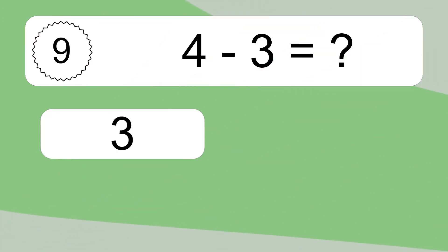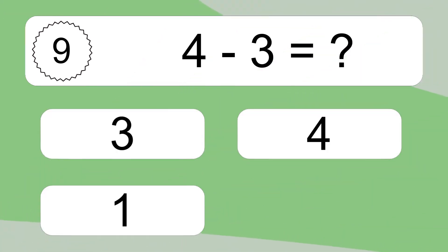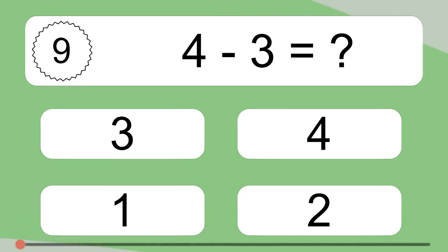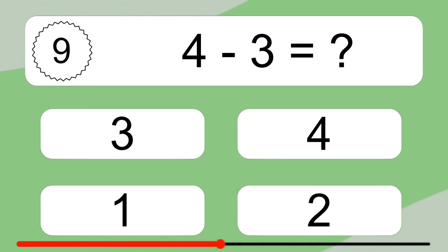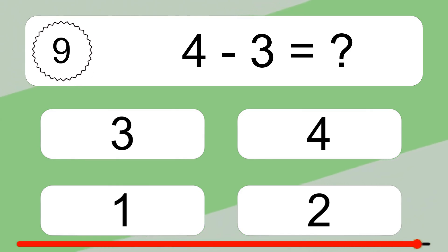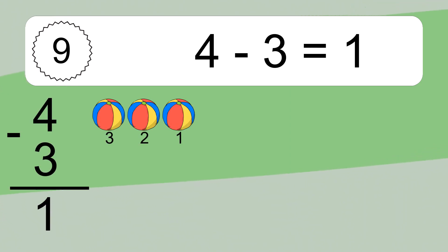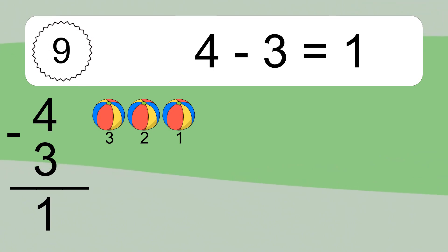4 minus 3 equals what? 4 minus 3 equals 1. Let's count it: 3, 2, 1.